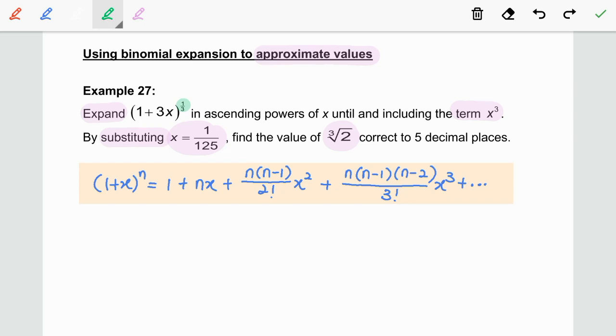Determine x and n by comparing (1 + 3x)^(1/3) with (1 + x)^n. As we can see, x is equal to positive 3x and n refers to the power number which is 1/3.